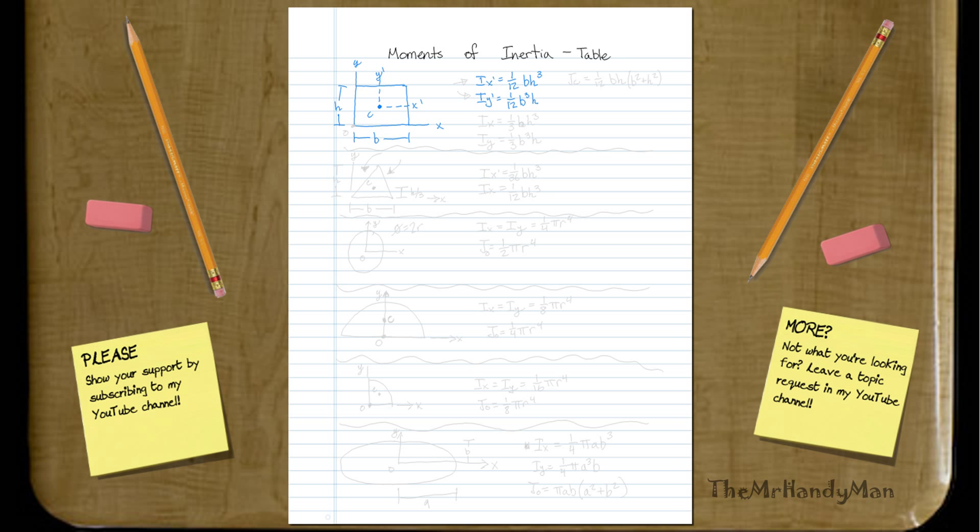Then you'll have just about the X axes in general, which we already know, 1/3 base times height cubed. And then you'll have I about the Y axes, and that will be base cubed height. And then you'll have your, we already know the, about the polar.